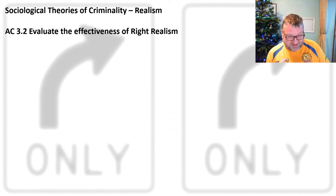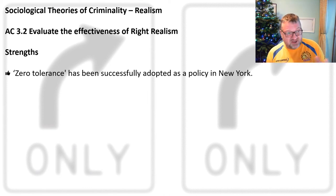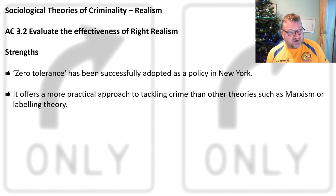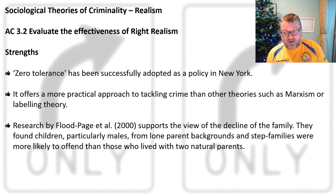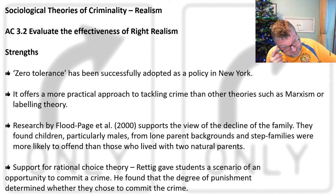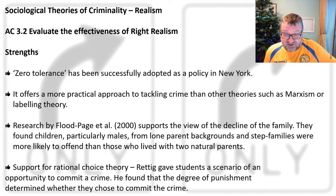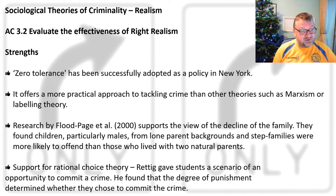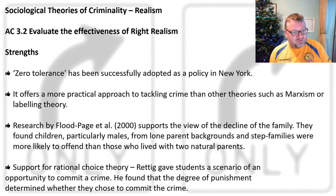Let's evaluate right realism's effectiveness. Zero tolerance has been successfully adopted as a policy in New York — when it was introduced, crime rates went down. It offers a more practical approach to tackling crime than theories such as Marxism or labelling theory. Research by Flood Page et al. in 2000 supports the view that children from lone-parent backgrounds and step-families, particularly males, were more likely to offend than those living with natural parents. There is also support for rational choice theory: Rettig gave students a scenario of an opportunity to commit crime and found the degree of punishment determined whether they chose to offend — the harsher the punishment, the less likely they were to commit crime.